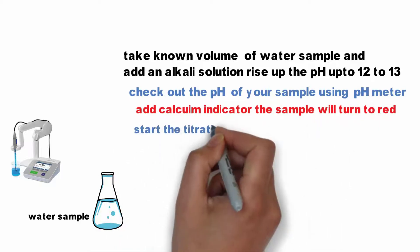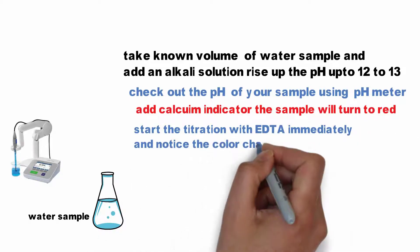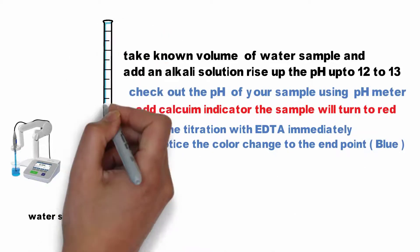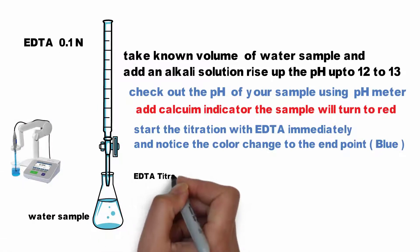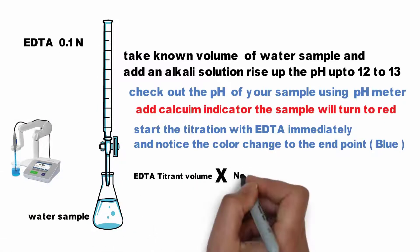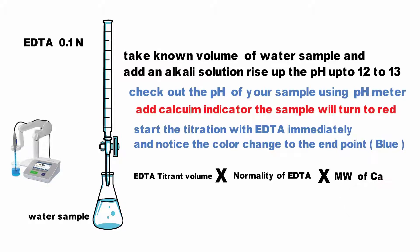The sample will turn red. Start the titration with the EDTA immediately and notice the color change to the endpoint, which is blue. Calcium hardness equals EDTA titrant volume times the normality of EDTA times the molecular weight of calcium divided by the sample volume.